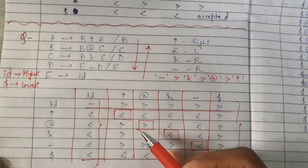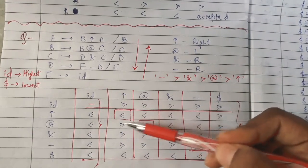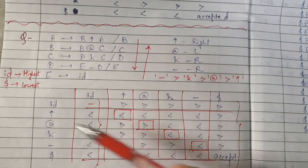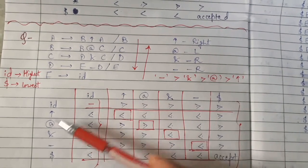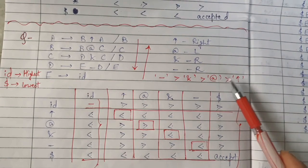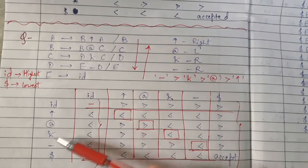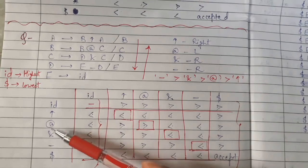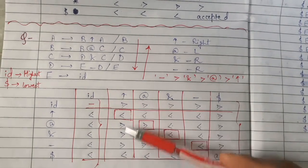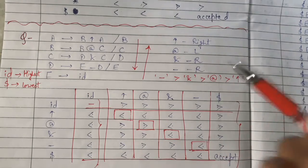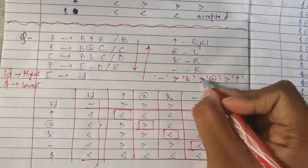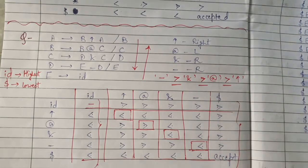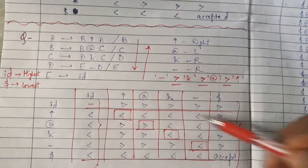Now let's fill the remaining cells, excluding the same-operator diagonal. For example, the intersection of at-the-rate and exponential: since at-the-rate has more precedence than exponential, we write greater-than. Similarly percent vs exponential: percent is greater, so greater-than. Based on the precedence ranking we determined earlier, you can fill each remaining cell by comparing the two operators involved.